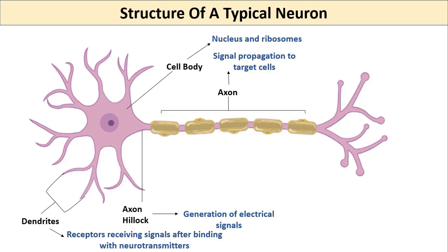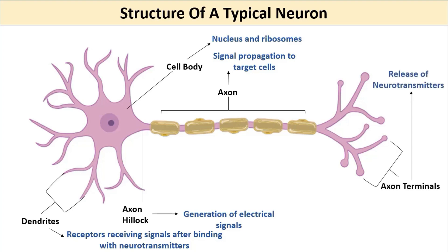The next task is to pass signals to the next neurons or target cells. Since this passing signal is again in the form of chemical messengers called neurotransmitters, neurons require particular structures to release these neurotransmitters, called axon terminals. Axon terminals take up calcium ions from outside and in turn release neurotransmitters with the help of calcium-dependent vesicles.